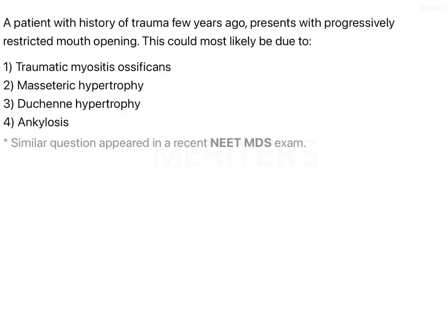A patient with a history of trauma a few years ago presents with progressively restricted mouth opening. There are two key points here: the history of trauma is the first and most important, and the second is the progressively restricted mouth opening.